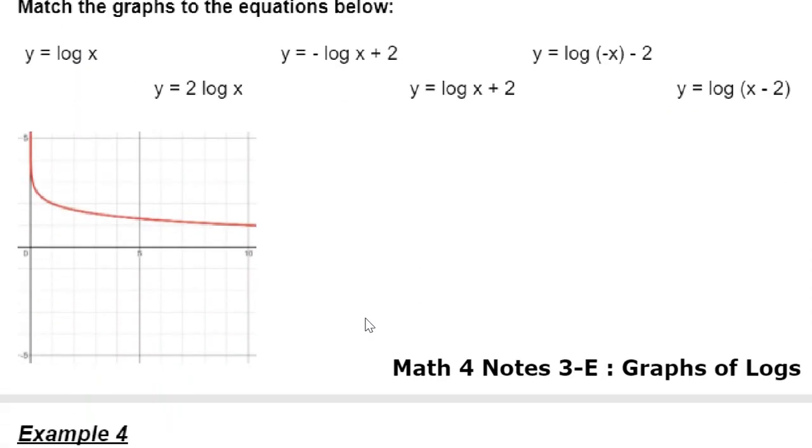For this one, it looks like I flipped on the x-axis, which means that I should have a negative out front, which looks like that guy. It also appears that I have moved up 2 units, too.